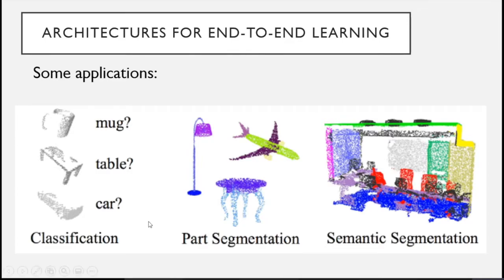These tasks can be classification — you have the input as an object and the output is to classify or categorize the object. The objective can also be part segmentation, where you have an object and you want to segment it into its semantic parts. Or you can have a scene — a room or a scene in a city obtained from LiDAR sensors — and you want to segment this point cloud into semantic objects or semantic structures.